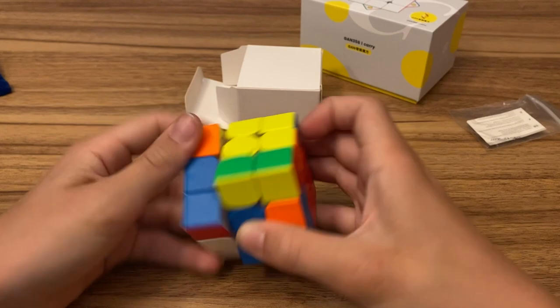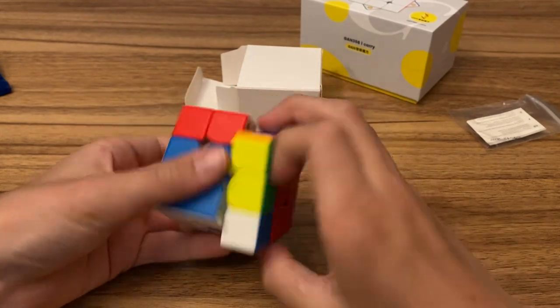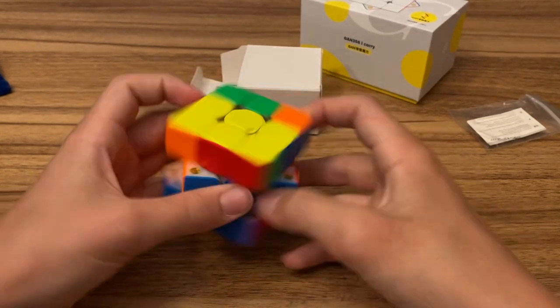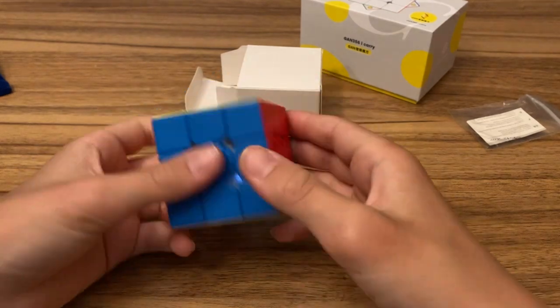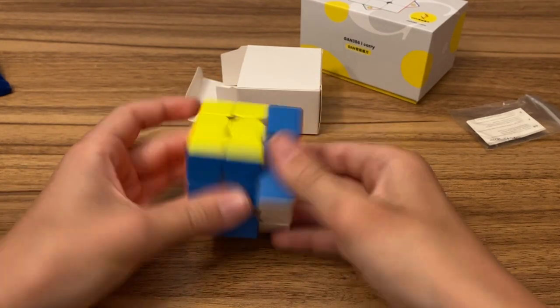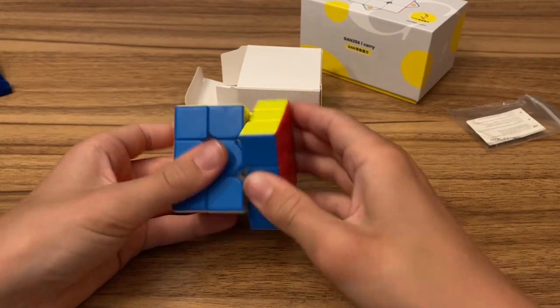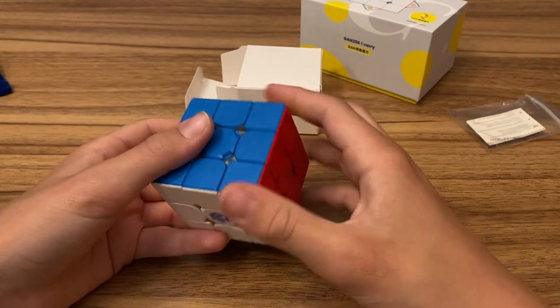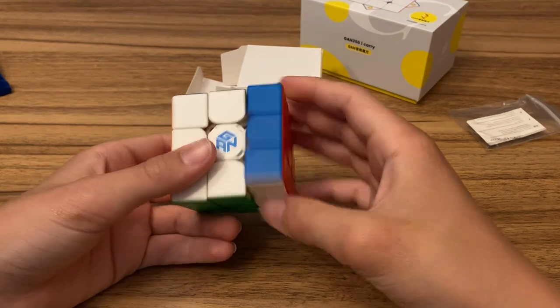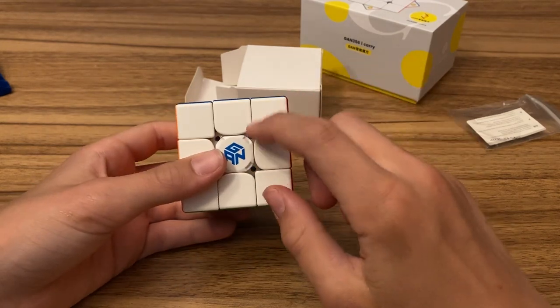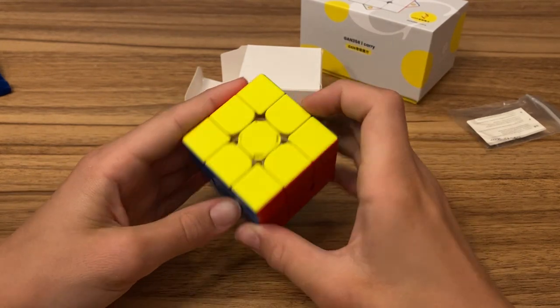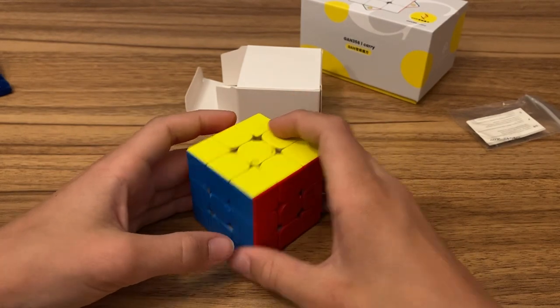But yeah, it feels pretty good. Let's see corner cutting. You can cut 45 degrees. Reverse is decent for a cube. I saw there's a light blinking. It probably has something to do with connecting to the app, so let's get that open.